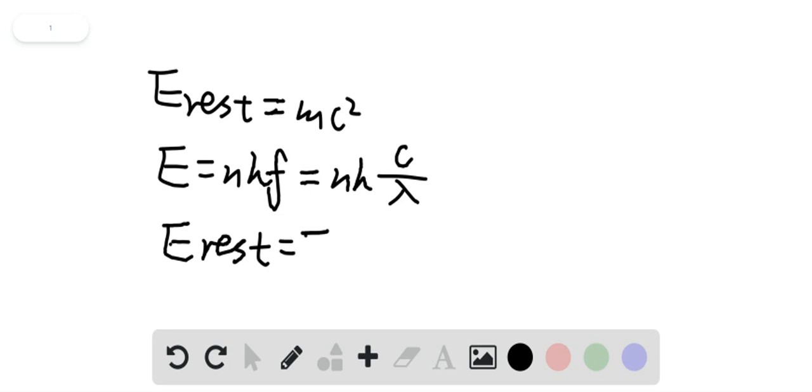So let's set E_rest equal to E, because we're trying to figure out the number of photons, and that will give us mc squared equal to nh times c over lambda.